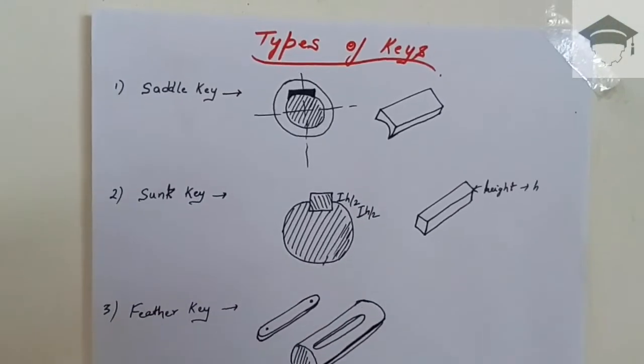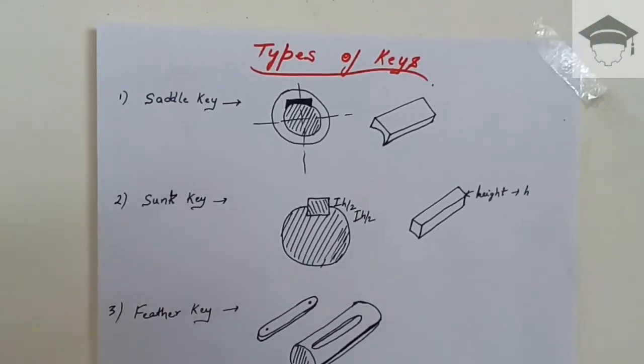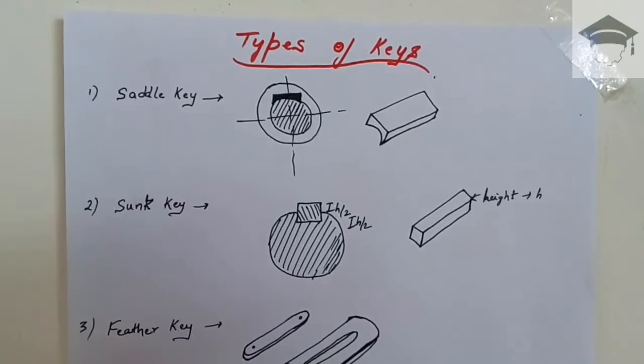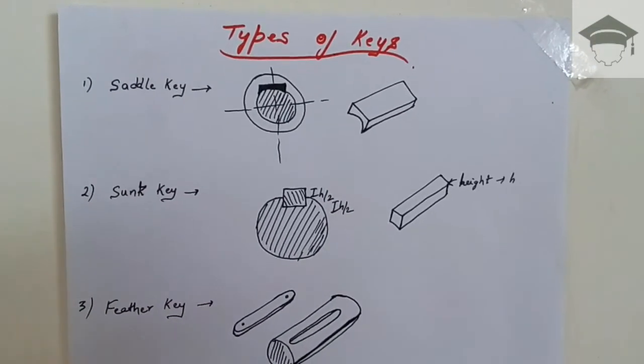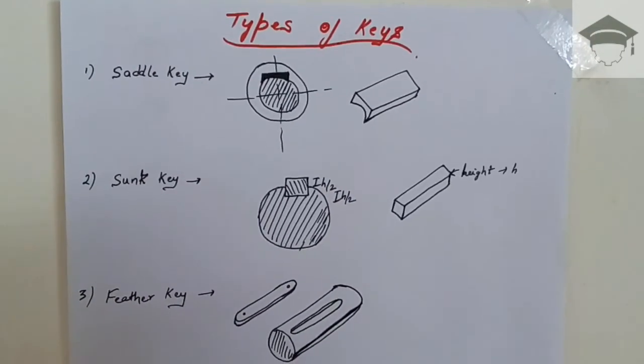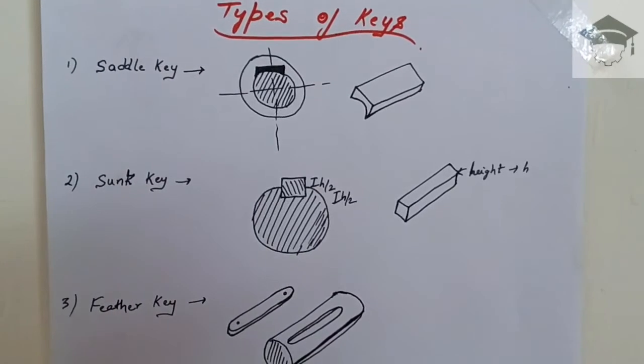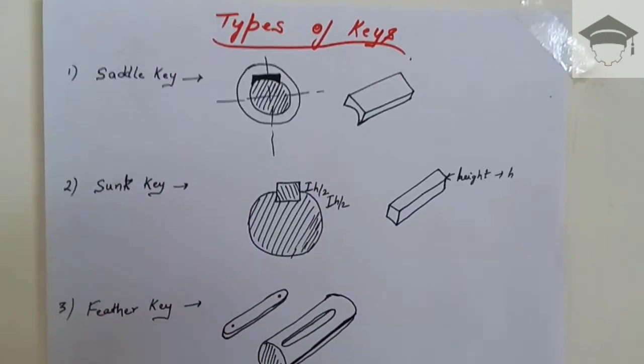It also prevents relative motion between the shaft and the hub. These are the functions of the key. First is the saddle key. The saddle key is of this shape and fits on top of the shaft into the hub.